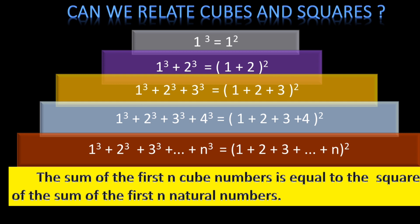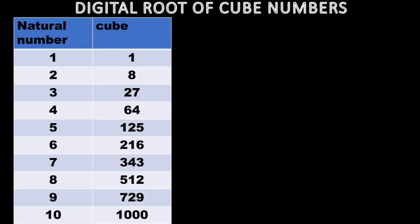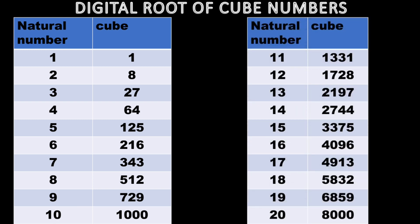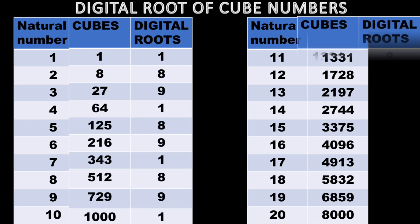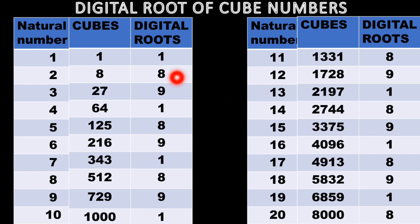Finally, the digital root of a cube number — the digit obtained by repeatedly summing the digits until a single digit remains. Looking at the cube numbers, a clear pattern emerges: the digital root is always 1, 8, or 9, repeating in the sequence 1, 8, 9, 1, 8, 9... So the digital root of any cube number is either 1, 8, or 9. Hope everyone enjoyed learning — thank you!